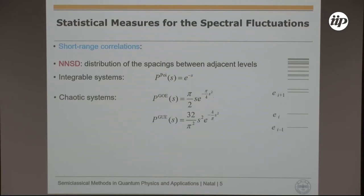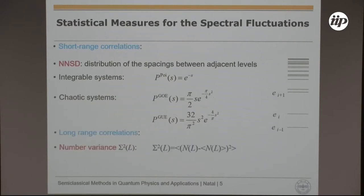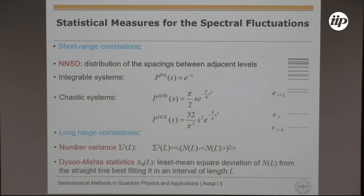To determine the value of lambda I use an analytic expression for the nearest-neighbor spacing distribution. The spectral quantities I consider are: the nearest-neighbor spacing distribution between adjacent eigenvalues — Poissonian for integrable systems, the Wigner distribution for chaotic systems with preserved time-reversal invariance, which decays Gaussian-like for large s and increases linearly for small spacings. For the GUE it increases like s-squared. Long-range correlations include the number variance sigma-squared and the delta-3 statistic, which gives the least mean-square deviation of the number of levels in an interval L from a best-fitting straight line.